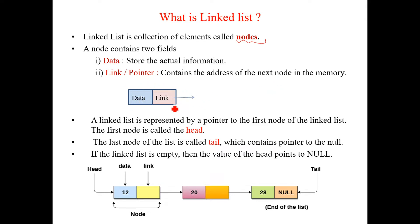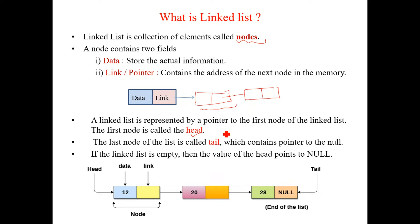Each node has a data part containing actual information and a link part containing the address of the next node. There are two key terms: head, a pointer to the first node of the linked list, and tail, the last node whose link contains null. If the linked list is empty, head itself contains null.